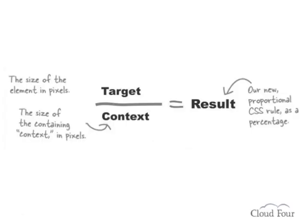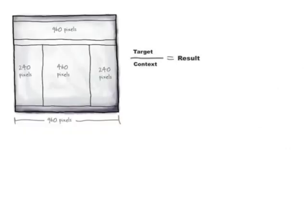The second principle of responsive web design is fluid layouts — CSS layouts that define content area sizes in proportional units, most often percentages. Instead of declaring a sidebar is 250 pixels wide, we express that width as a percentage of its containing element so it can scale as the window size changes. To convert a fixed-width element from pixels to proportions, we use the fluid formula: divide the target pixel width by the context pixel width.